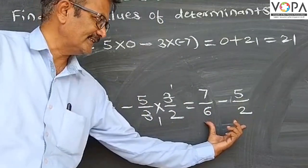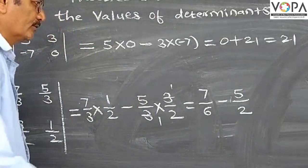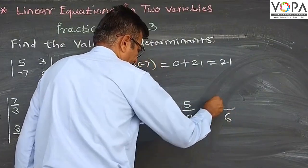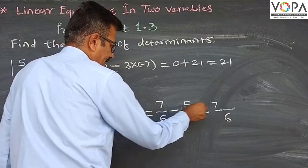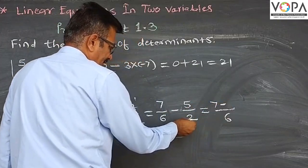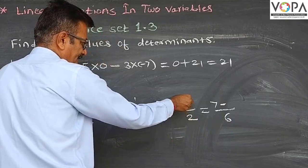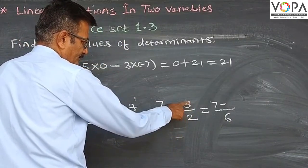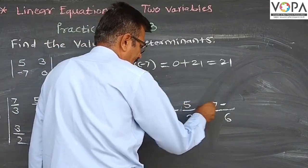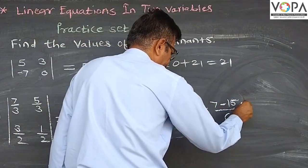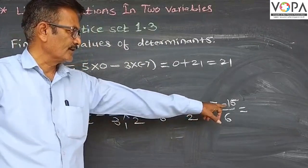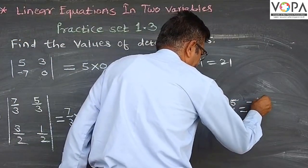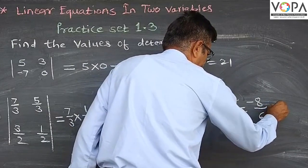Denominator is 6 and 2... 7 minus 8 equals... This is equal to minus 1 upon 6.